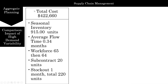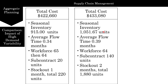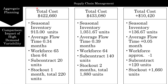For comparison, the original one had a total cost of 422,000, and this one has 433,000. Again, more seasonal inventory, higher flow time, workforce that's steady at 64, more subcontracting, and more stock out. This makes sense — because when you have higher variability, demand is shooting up from really low to very high, you are going to carry more inventory, you are going to have more subcontracting, and possibly more stock out. It's important that when you're making this presentation, you compare it and talk about why this is happening.